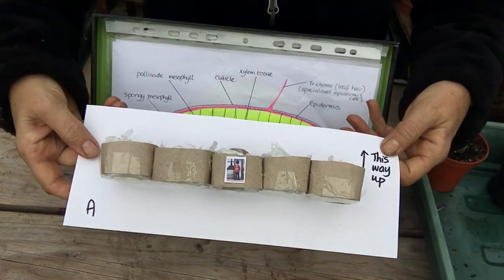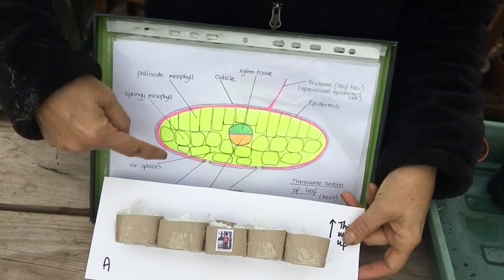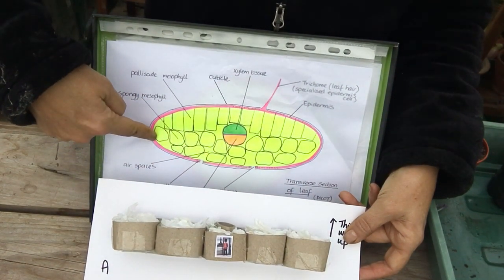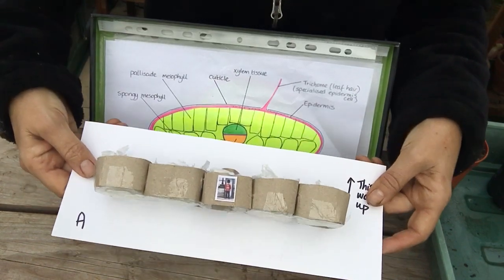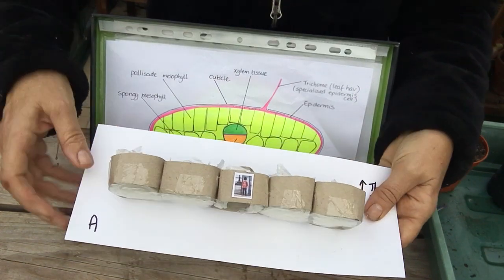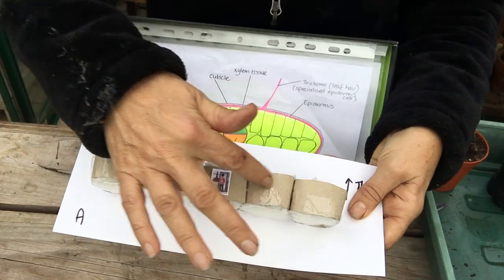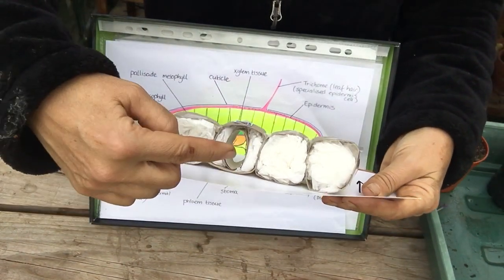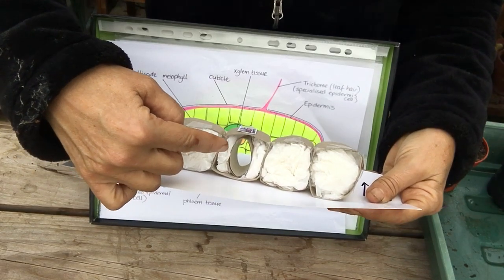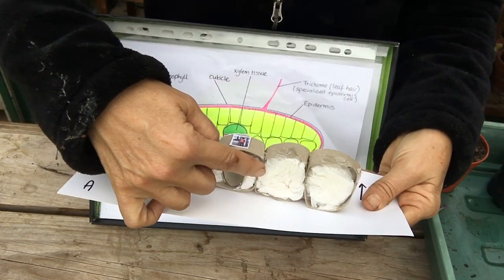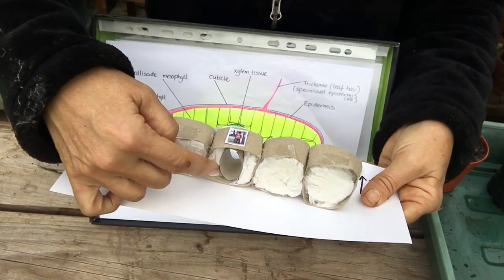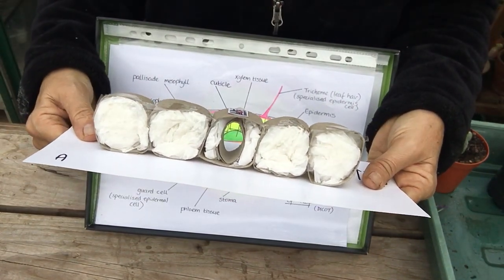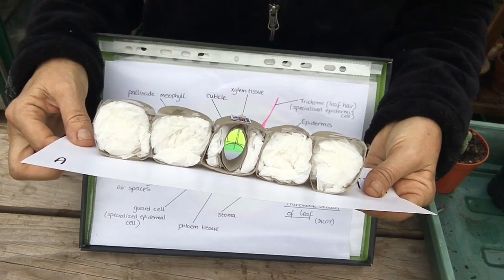This is another one, so this represents the lower epidermis in the leaf. You can see again tightly packed with no air spaces between, but we have here a modified type of cell called a guard cell. You have a guard cell either side of these openings in the lower leaf surface which are called the stomata. One's called a stoma.